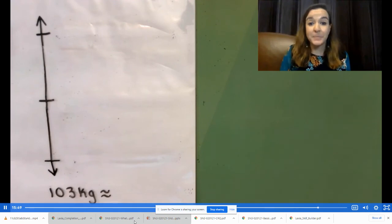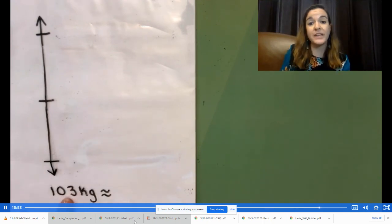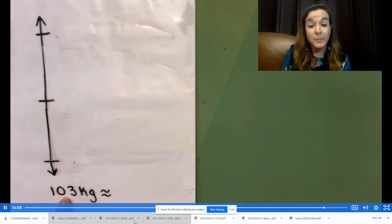For our last practice problem today, on your own, round 103 kilograms to the nearest 10 kilograms. Don't forget to ask yourself the question, how many tens are in 103? What is one more ten? And then find your halfway point. Go ahead and push pause on the video now to complete rounding 103 kilograms to the nearest 10.